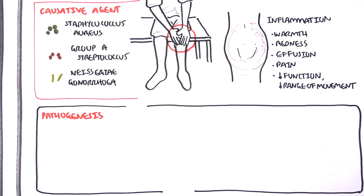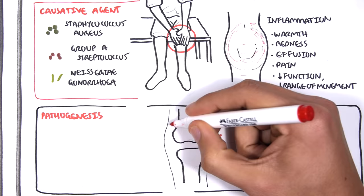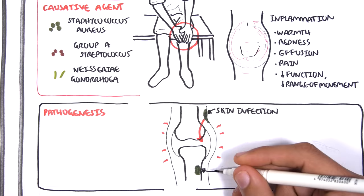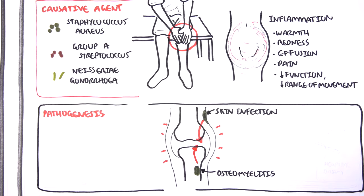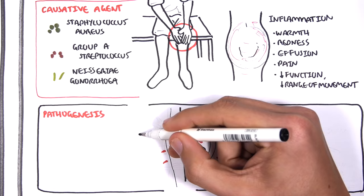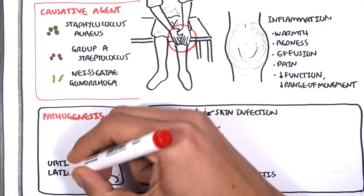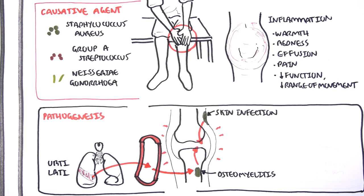A quick recap of the pathogenesis of septic arthritis: here is an inflamed joint. A skin infection, such as that from Staphylococcus aureus, can disseminate into the joint causing septic arthritis. Osteomyelitis, which is inflammation and infection of the bone marrow usually caused by Staphylococcus aureus, can locally invade the joint. Upper or lower respiratory tract infections from Group A Streptococcus can hematogenously spread to the bone causing osteomyelitis, which then can lead to septic arthritis. Alternatively, an STI from Neisseria gonorrhea can disseminate into the joint causing septic arthritis.